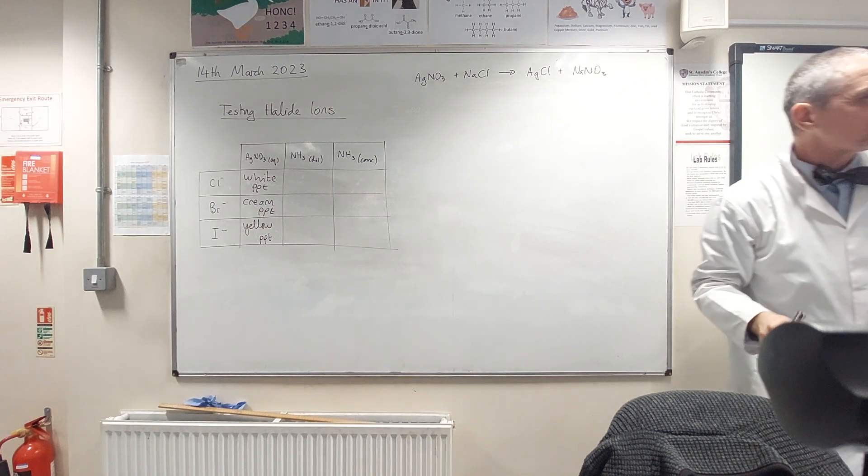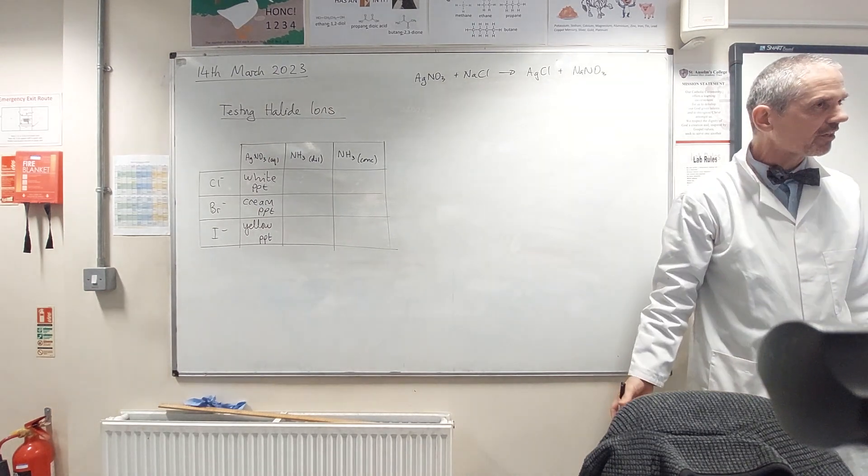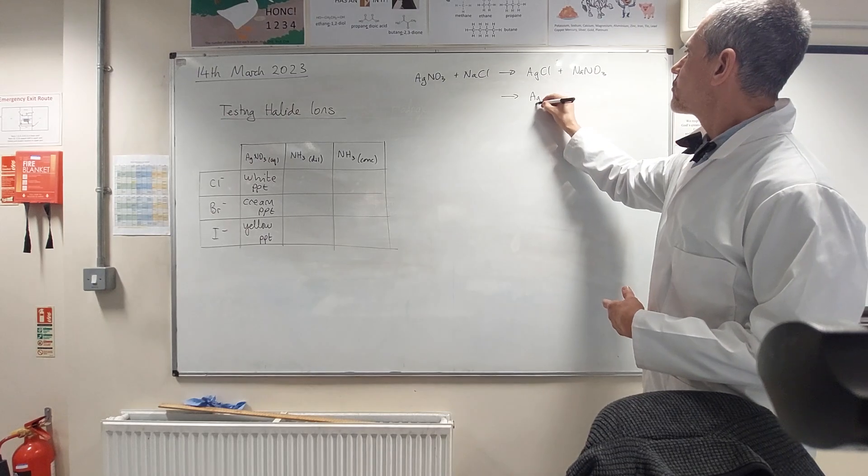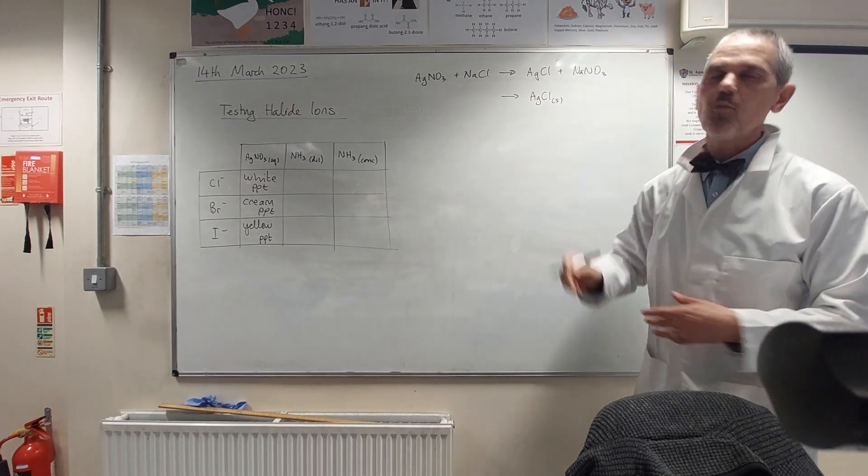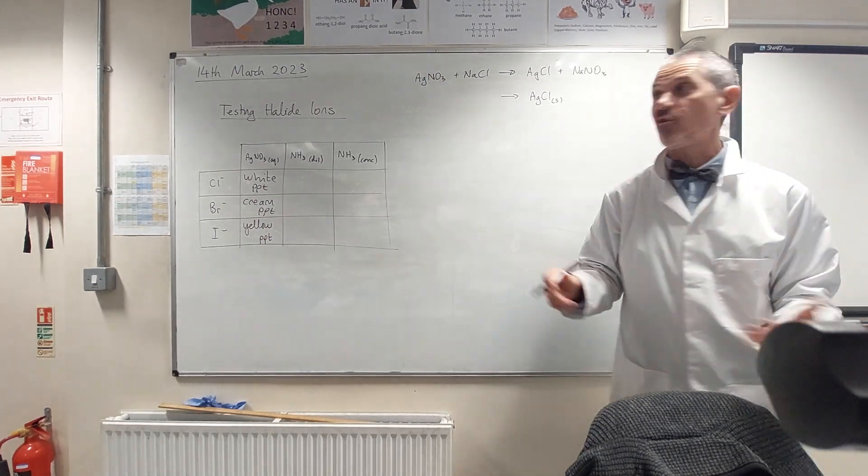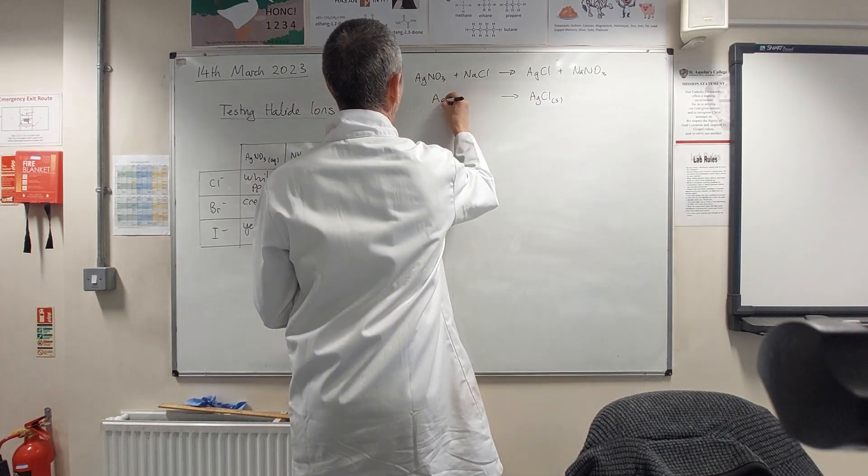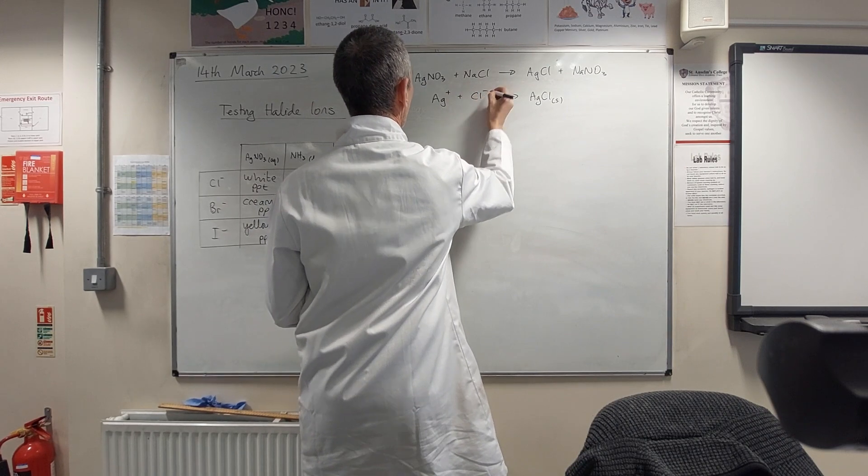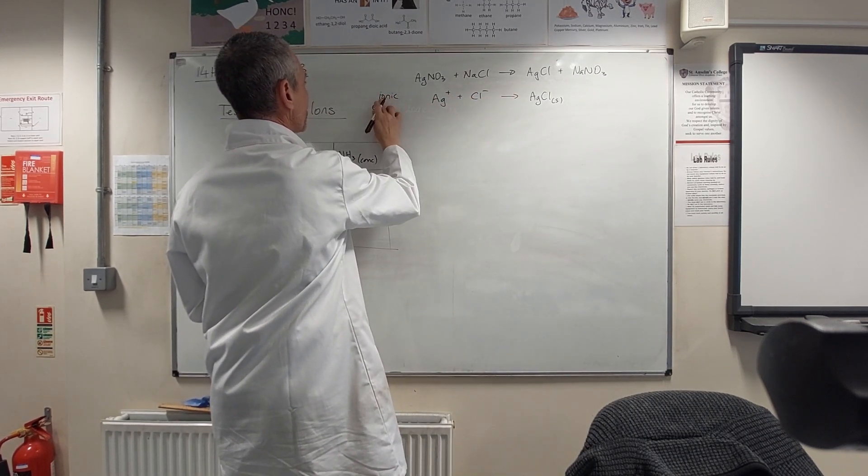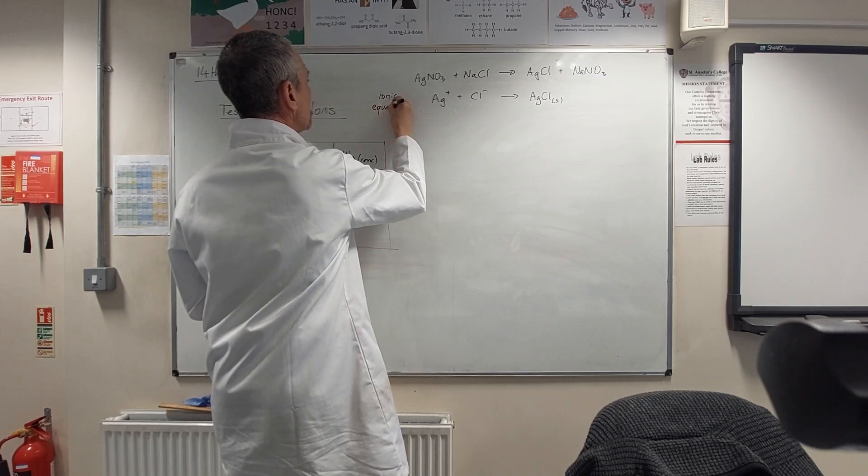But a better reaction really just shows the chemicals that are involved. So if we just focus on the product there, the white precipitate you're making is silver chloride, and that is made from silver ions and chloride ions. So that's usually referred to as the ionic equation.